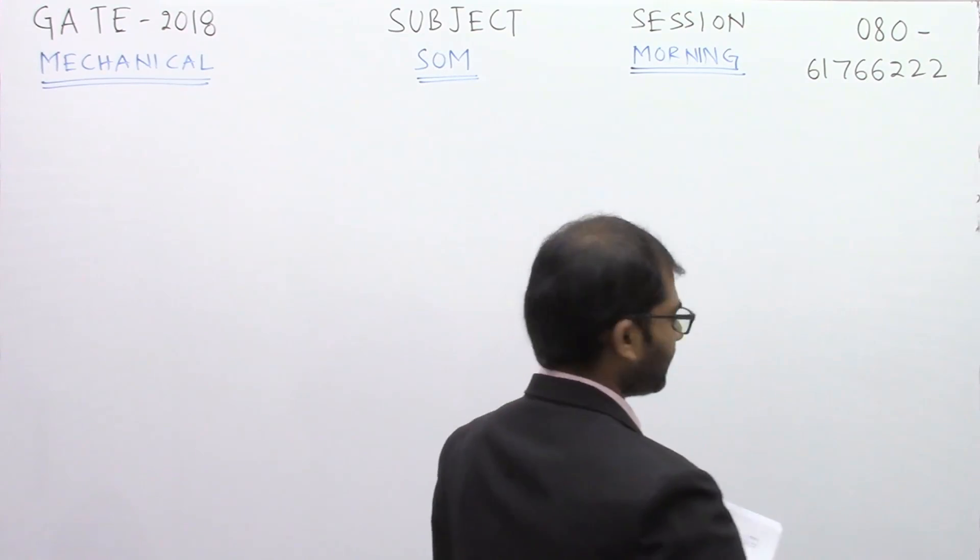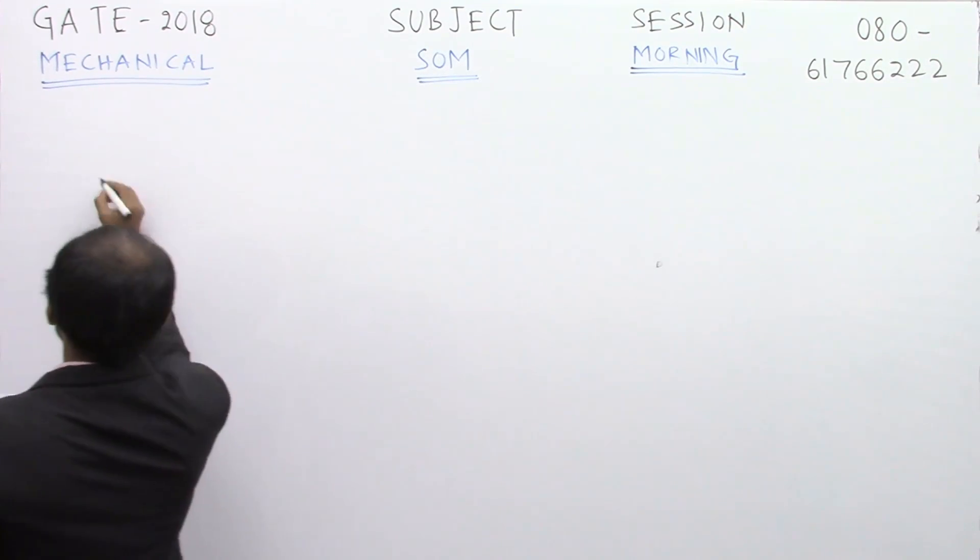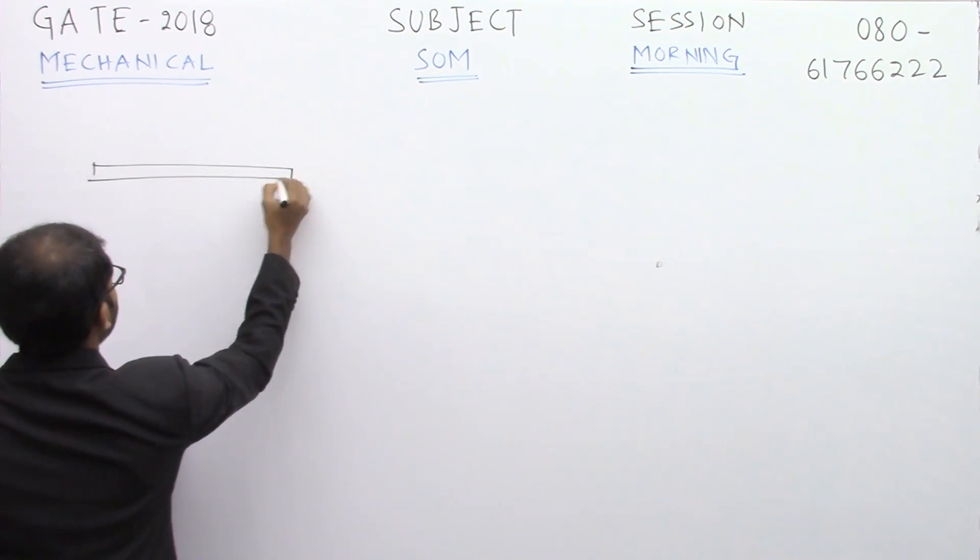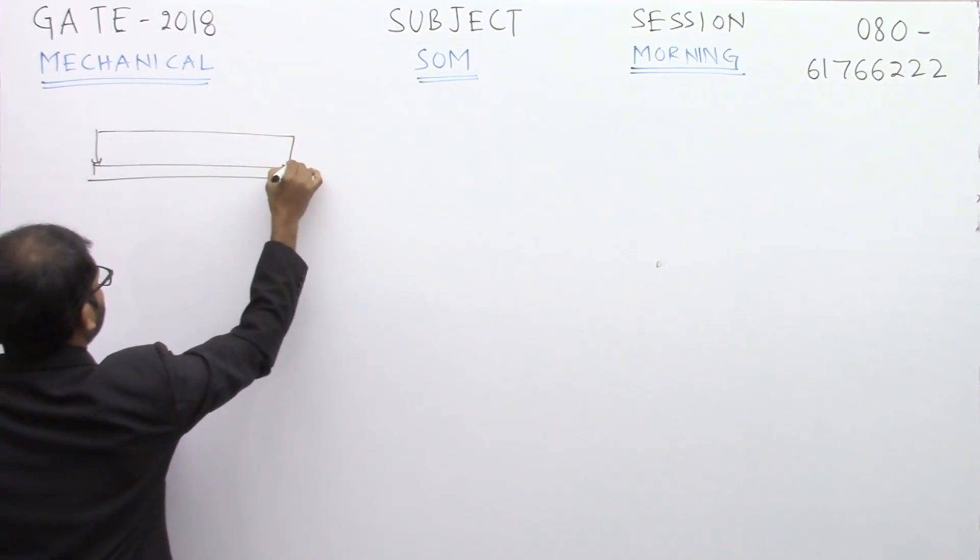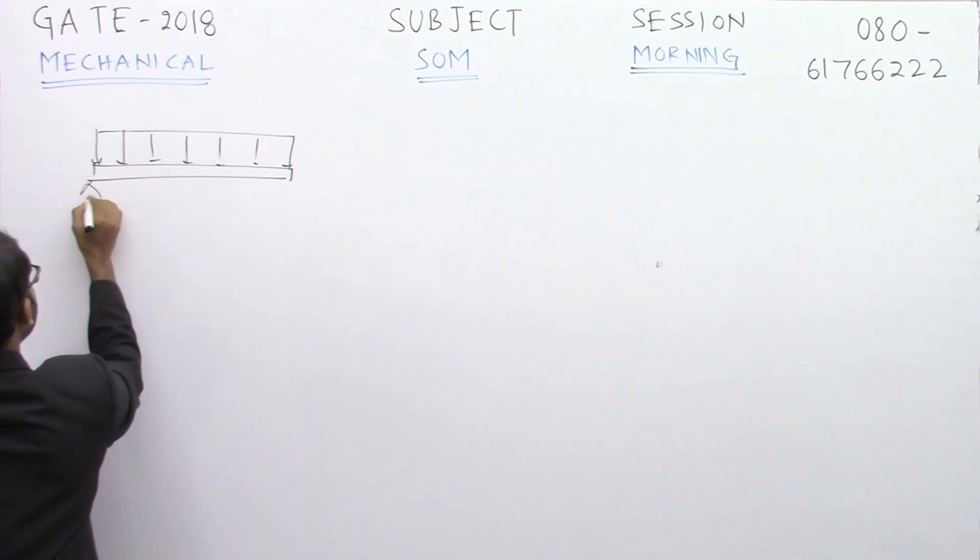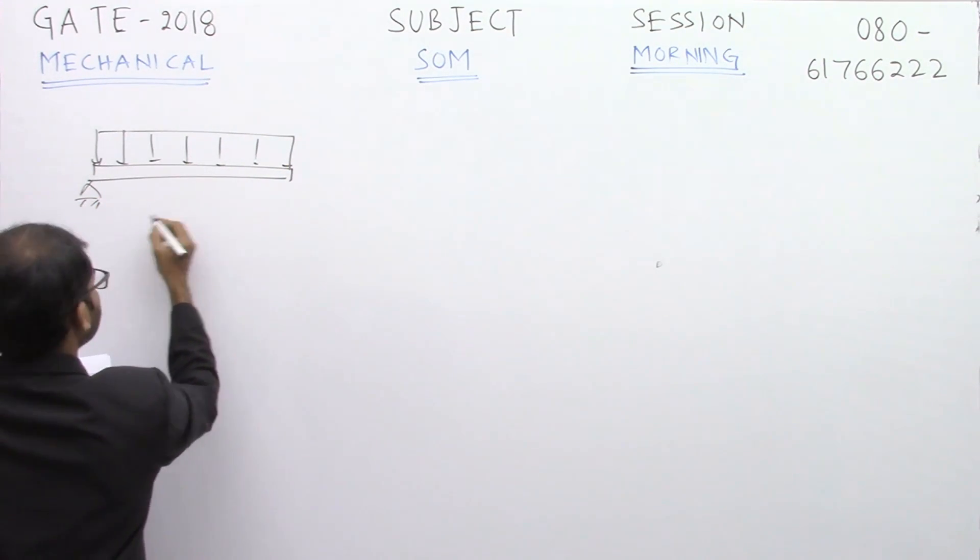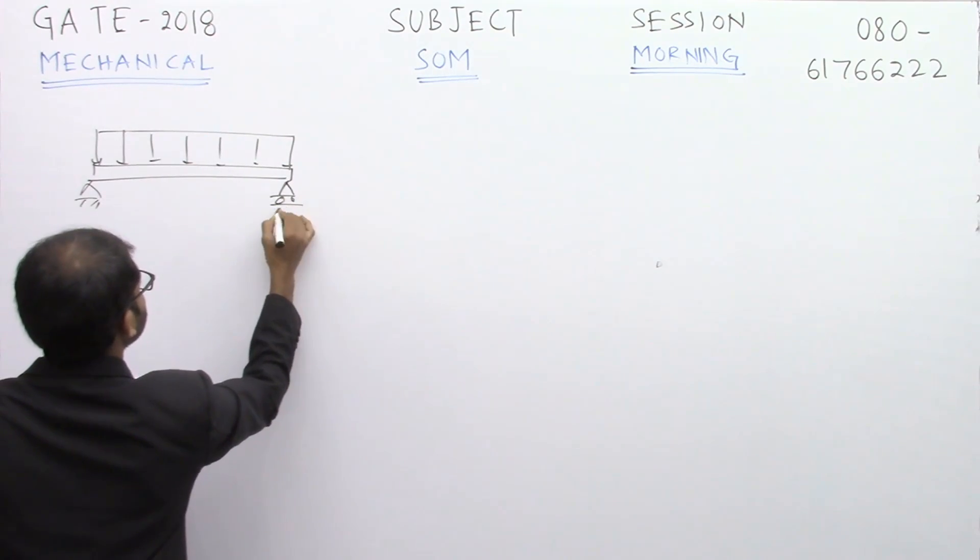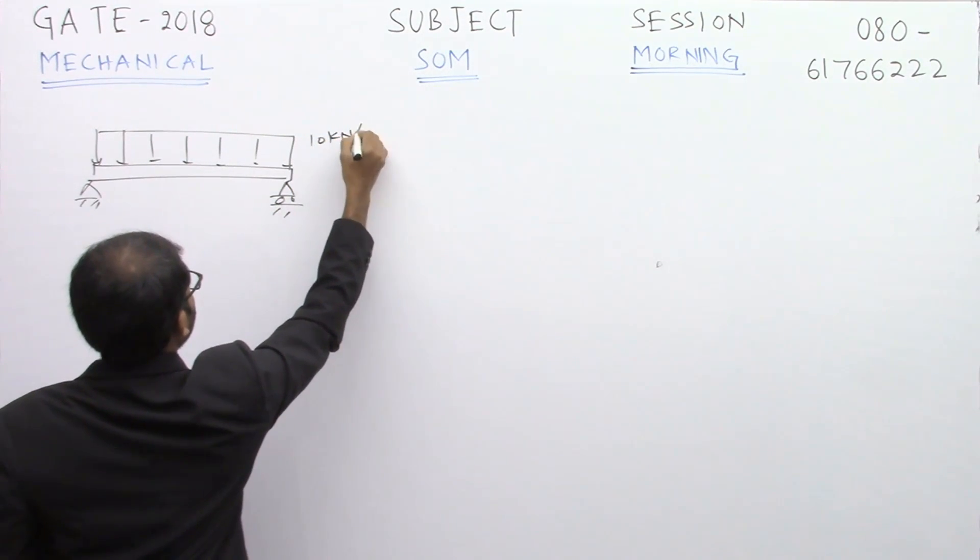The diagram is given, so I'm drawing the diagram once again here. It is a uniformly distributed load of intensity 10 kN per meter.